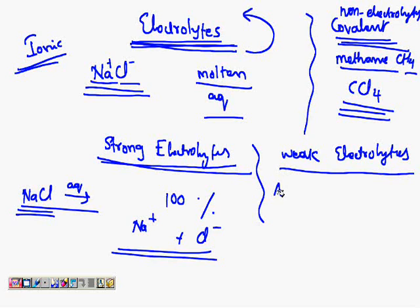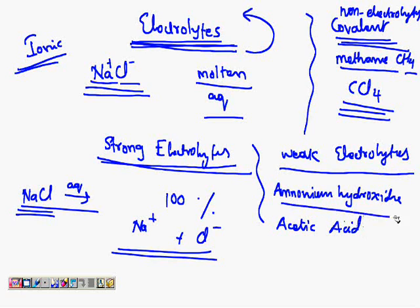While there are some compounds like ammonium hydroxides, then acetic acids. Here the splitting is to a smaller extent say example 5 percent. It means if I am having 100 molecules of ammonium hydroxide then 5 of them will split up and 95 of them will remain together. So few number of ions are there therefore they will be coming under weak electrolytes.